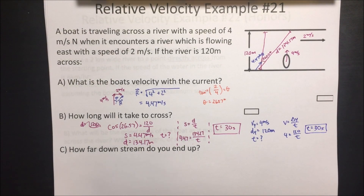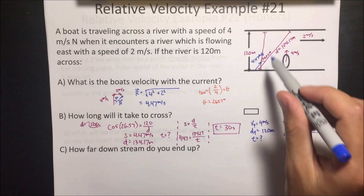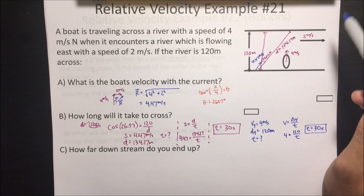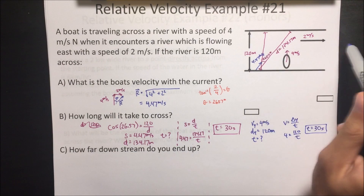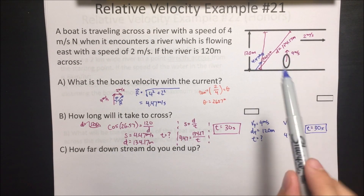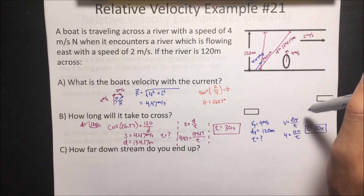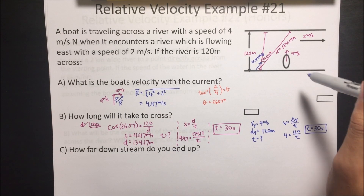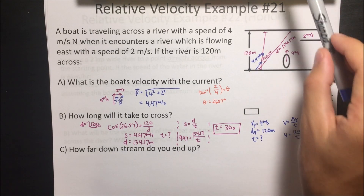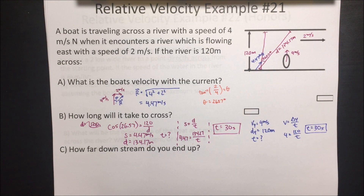This is really important because it shows that what's happening in the X direction doesn't affect what's happening in the Y direction. Even if the current was going 500 meters per second and the boat was going north at 4 meters per second, it would still get to the other side in 30 seconds — it might end up further downstream, but if you're paddling north you'll cross in the same amount of time.